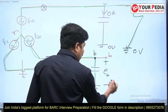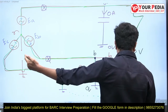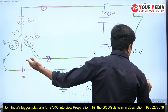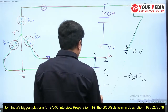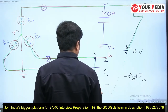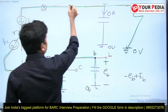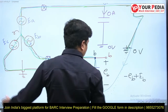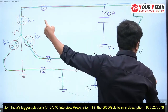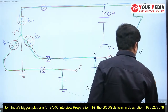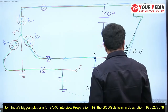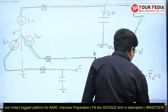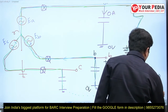Writing KVL for the closed path: minus eB, plus eB', minus eA equals zero. Solving: eB equals eA minus eB, which equals eAB.